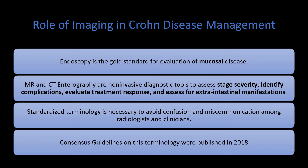When we think about how imaging impacts the management of Crohn disease, the first thing to realize is that endoscopy is really the gold standard for evaluation of the mucosa of the bowel. Whether that's upper endoscopy that can surveil the esophagus, stomach, duodenum, even parts of the small bowel, or colonoscopy looking at large bowel manifestations — endoscopy is the gold standard for mucosal inflammation, which we may not see subtle signs of on imaging.